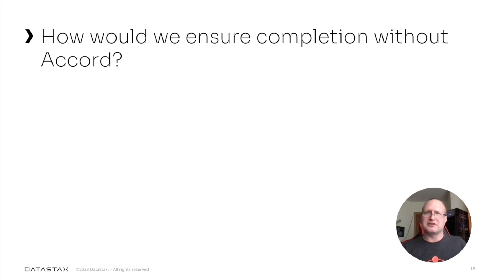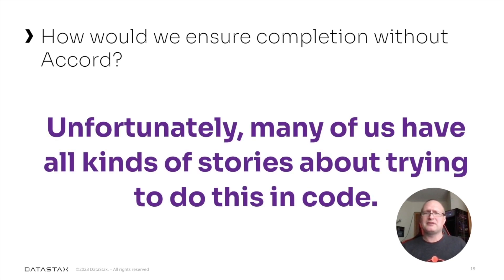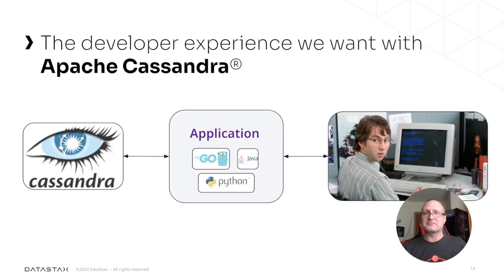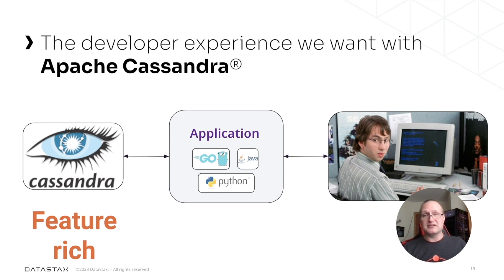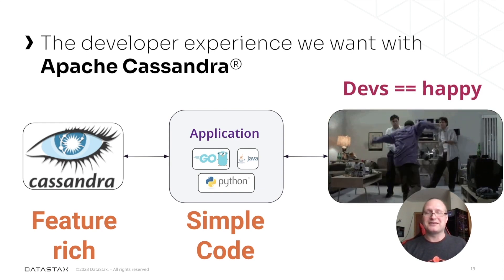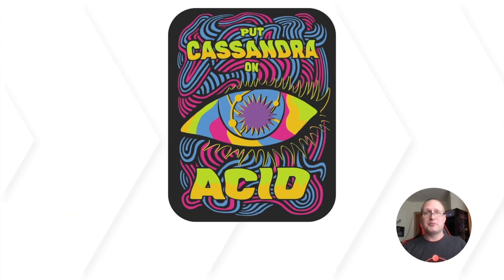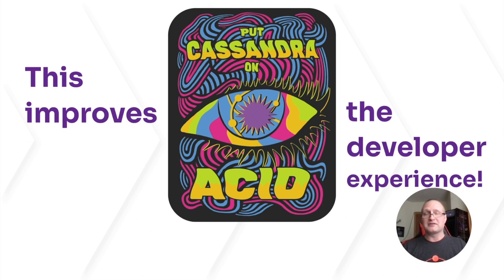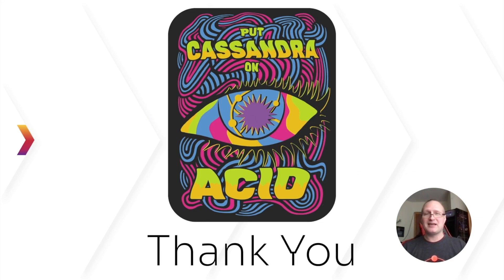So if we didn't have Accord, how would we do this? There are ways — those of us who have used Cassandra for a long time have stories about trying to do this and other complex operations in code. Bringing Accord and ACID transactions into Cassandra really helps with the developer experience. When devs are writing applications on Cassandra, we want to give them a feature-rich database to work with, because that means they can write simple code — and simple code makes devs happy. By putting Cassandra on ACID, we are drastically improving the developer experience as well as opening Cassandra up to a whole world of amazing use cases. Thank you very much and enjoy the rest of Cassandra Fork.